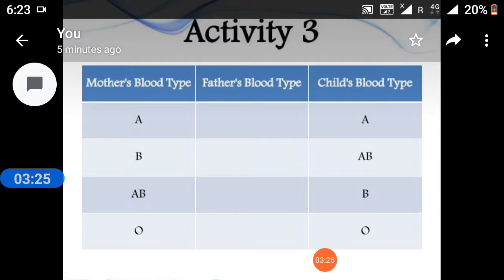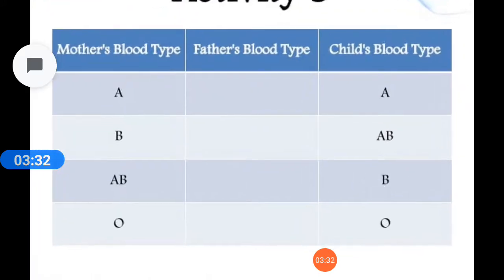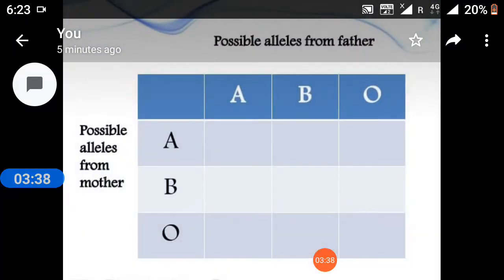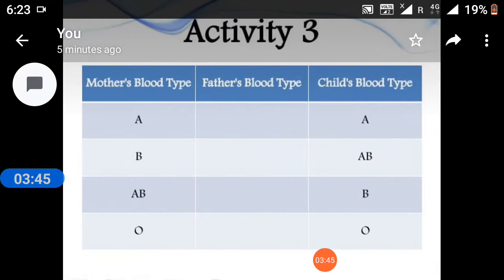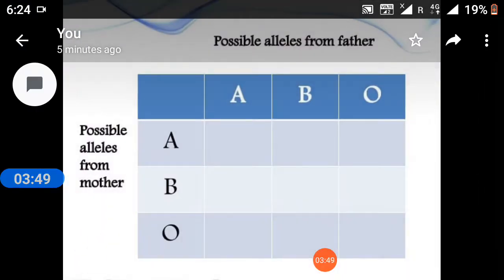Activities: The scene displays mother blood types and child blood types, and the next possible alleles from fathers. Thank you, students.